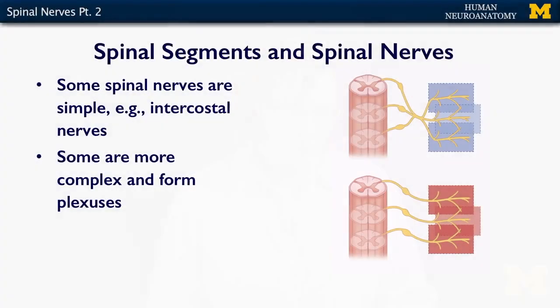Spinal segments and spinal nerves — some of them are a little more complicated than others. In general, this diagram represents what we talked about in the previous segment, where you have a spinal segment and one spinal nerve that comes out and distributes. This is a diagram of its distribution on your body surface. What you can see is that your spinal segments overlap, and that's a good thing. So most of them are pretty simple.